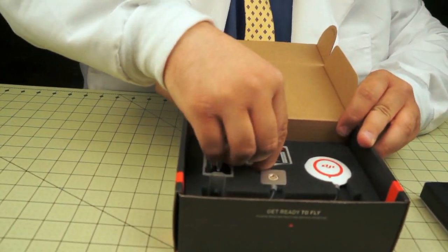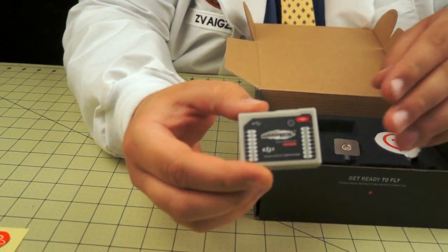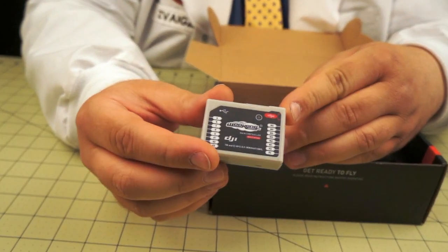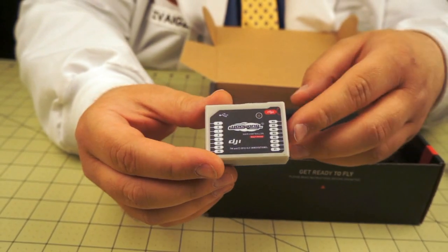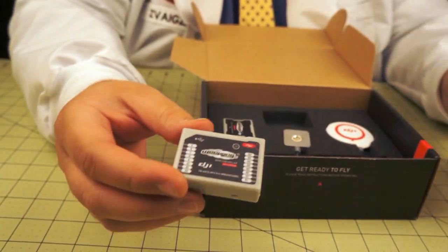Next we have, oh, this is the brain. This is the part which does all the thinking. Essentially it controls everything. You hook all your ESCs to it, you hook all your sensors to it, everything hooks to this.